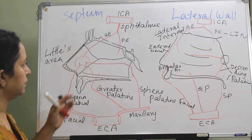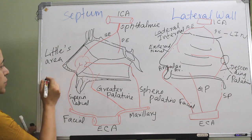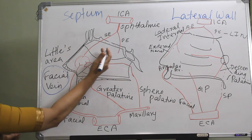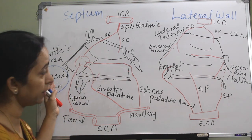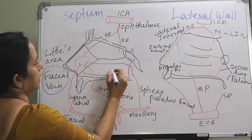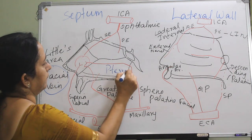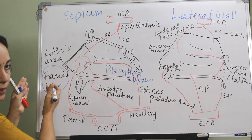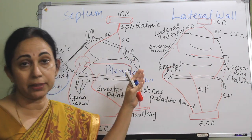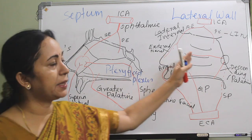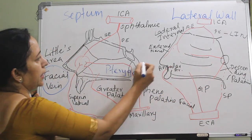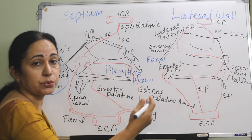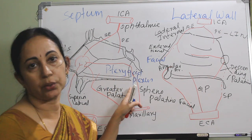In the venous drainage of the septum, from the anterior part it is going into the facial vein. From the posterior septal part it is going into the pterygoid plexus. In the lateral wall, similarly the anterior part goes to the facial vein, the middle part goes to the pterygoid plexus, and from the posterior part it goes to the pharyngeal plexus.